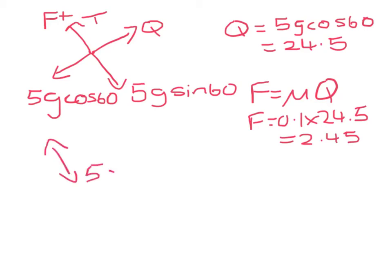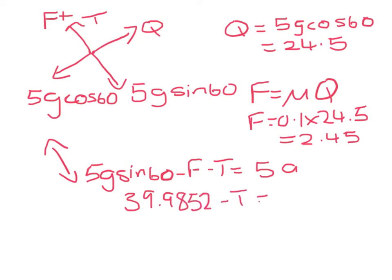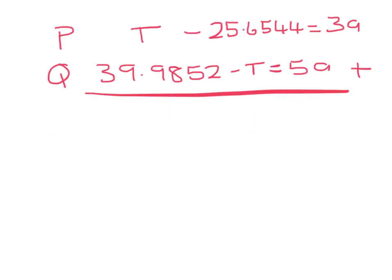If I then look parallel to the plane, the resultant force in the direction of motion has to equal mass times acceleration. 39.9852 minus T has to equal 5A. If I now combine my equations for P and Q and I add them together, the T's are going to be eliminated.